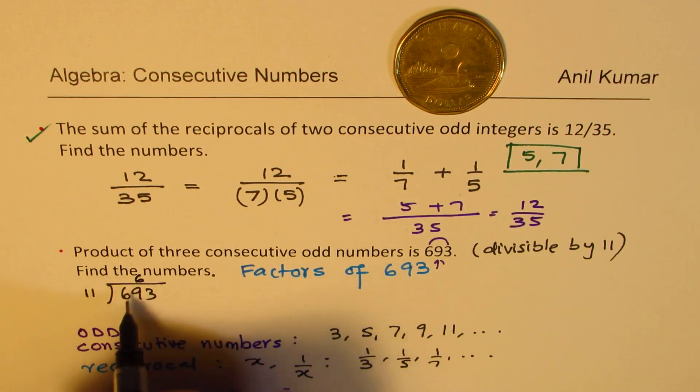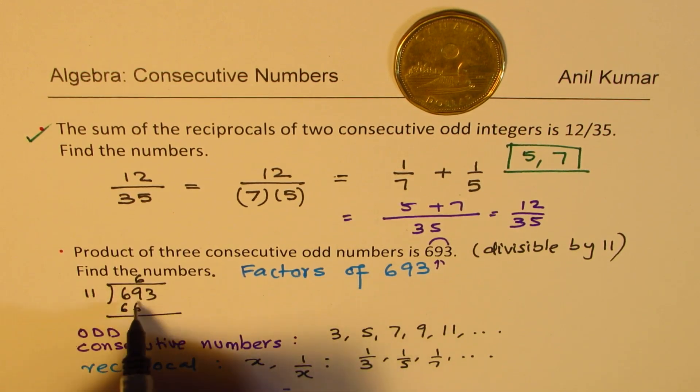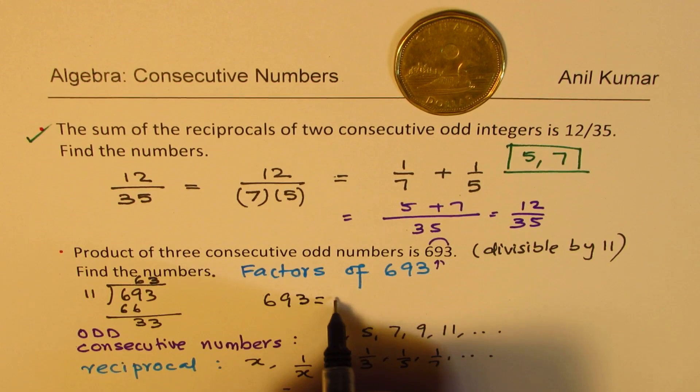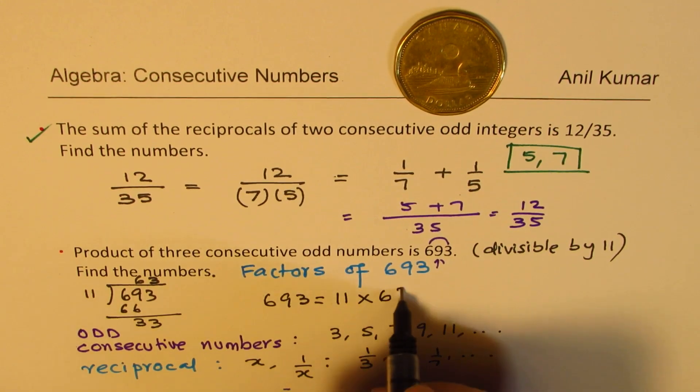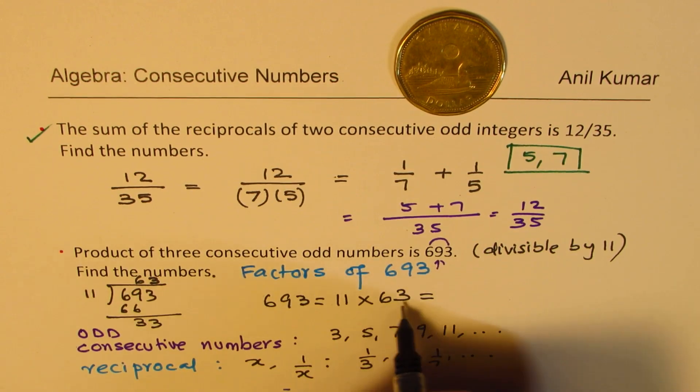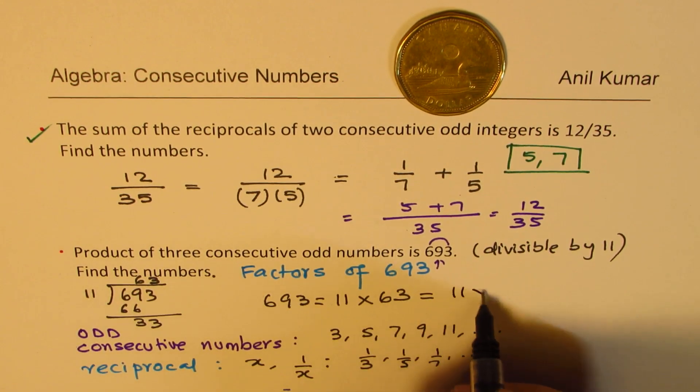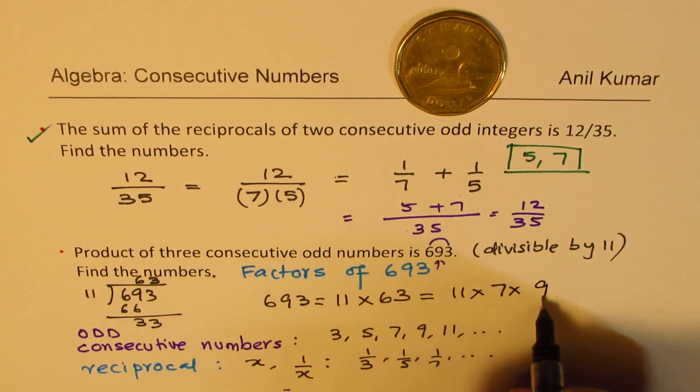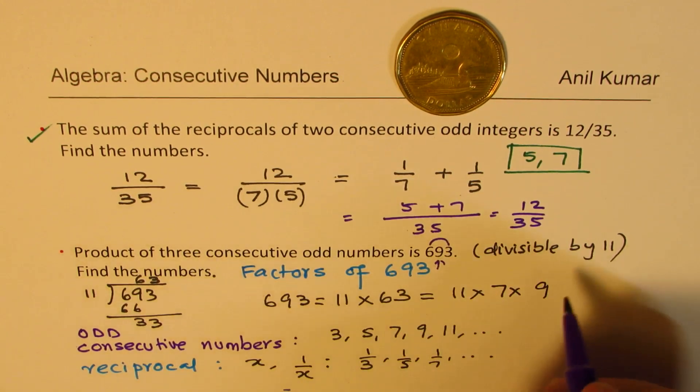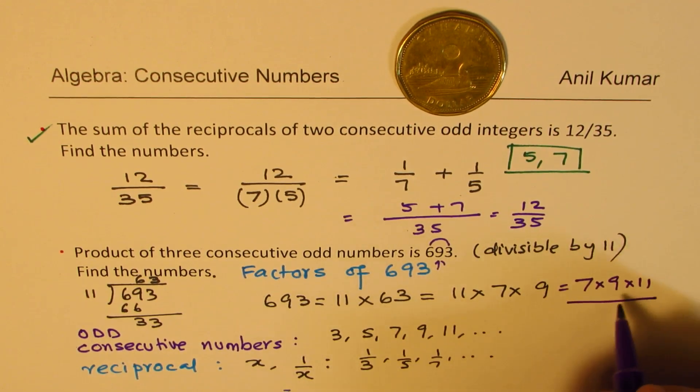So if I do that, I get 11 times 6 is 66 and then I get what? I get 33. So 33 means 63. That means I could write 693 as 11 times 63. And what is 63? Well, 7 times 9. So 63 is 7 times 9. So we could write this as 11 times 7 times 9. And do you notice these numbers are consecutive odd numbers? Yes, they are. Let's rearrange. So when you rearrange, you could write this as 7 times 9 times 11. So that becomes your answer. Do you see that?